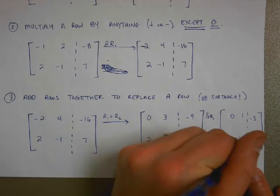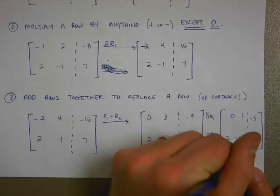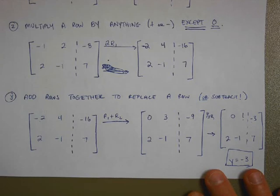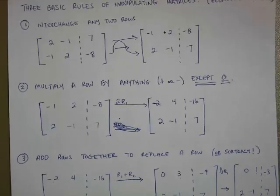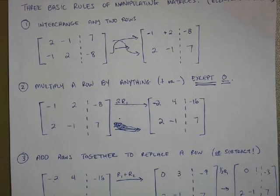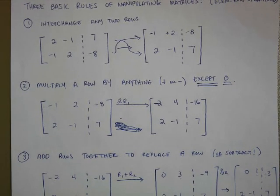And I've discovered then that 1y is equal to negative 3. In other words, y is negative 3. I could then go back and solve for x. So this is just one way to solve for x and y, but the basic rule is, once again, I can interchange any two rows anytime I want to. It didn't help us in this example, but sometimes it will.